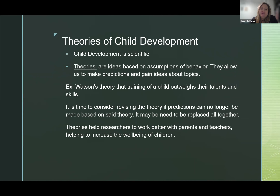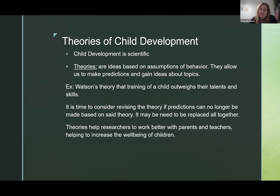There are theories of child development. First, child development as scientific. Theories are ideas based on assumptions about behavior that allow us to make predictions and gain ideas about different topics based on these behaviors. Watson's theory states that training of a child outweighs the talents of a child — how we raise them would outshine their natural talents. It may be needed to revise or replace a theory if predictions can no longer be based on it. Theories help researchers work better with parents, families, and teachers, helping to increase the well-being of the child in their care.